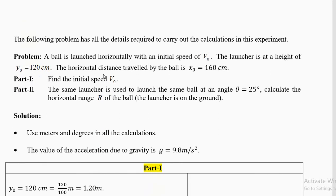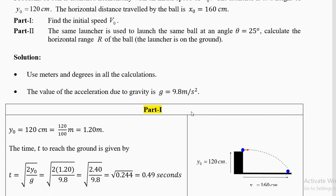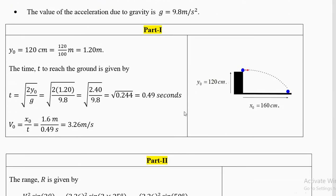Let's read out the problem. A ball is launched horizontally with a speed v0. The launcher is at a height of y0 = 120 centimeters. The horizontal distance traveled by the ball is x0 = 160 centimeters. Part 1: find the initial velocity v0. Part 2: the same launcher is used to launch the same ball at an angle of theta = 25 degrees. Calculate the horizontal range of the ball. The launcher is on the ground.